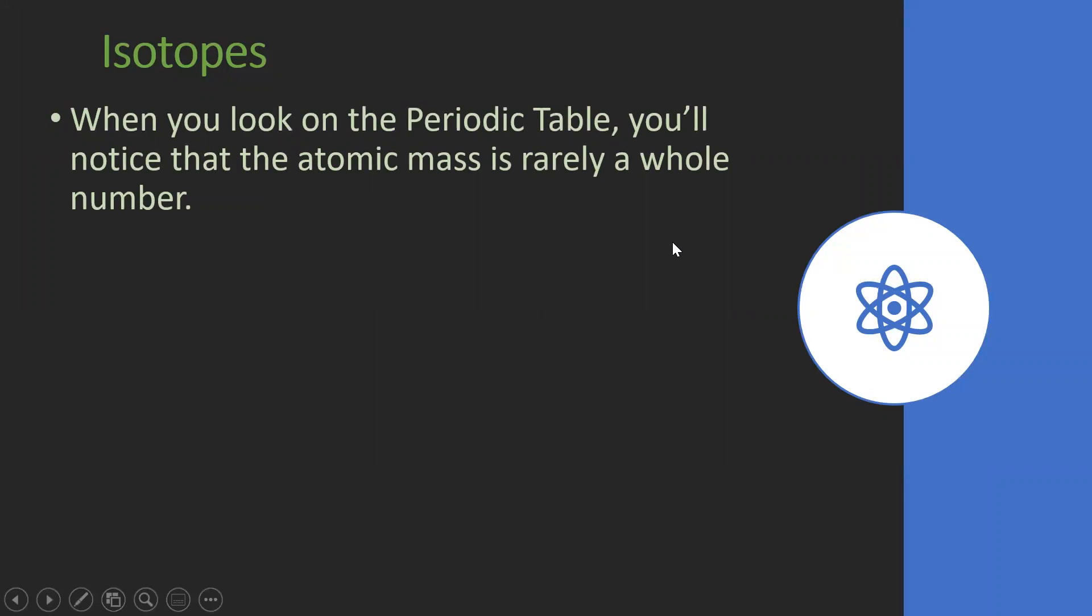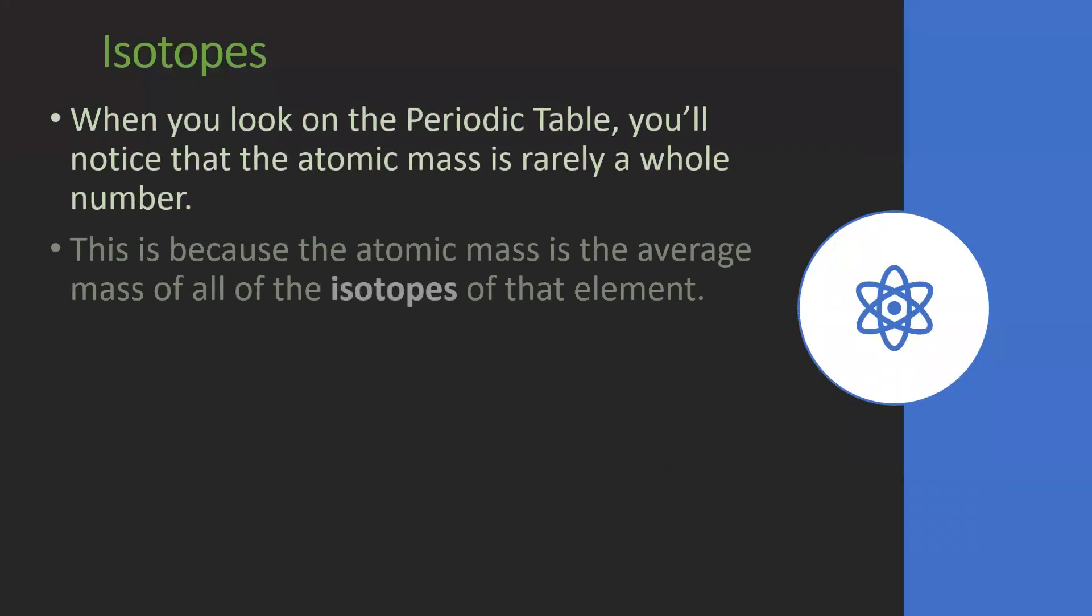Quick review. When you look on the periodic table, you'll notice the atomic mass is rarely a whole number. The reason behind this is because the atomic mass is this average mass of all the isotopes of that element. That's why you don't get a whole number, you get a decimal.